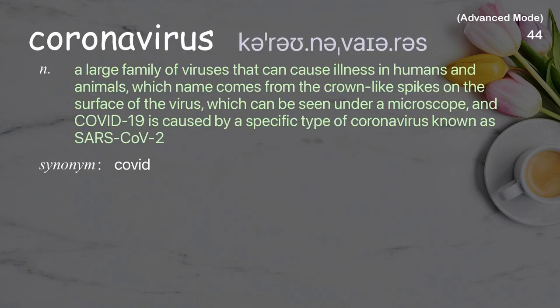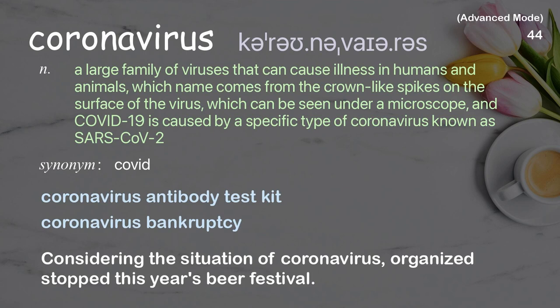Coronavirus: A large family of viruses that can cause illness in humans and animals, whose name comes from the crown-like spikes on the surface of the virus, which can be seen under a microscope. COVID-19 is caused by a specific type of coronavirus known as SARS-CoV-2. Examples: Coronavirus antibody test kit. Coronavirus bankruptcy. Considering the situation of coronavirus, organizers stopped this year's beer festival.